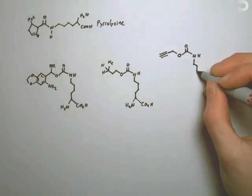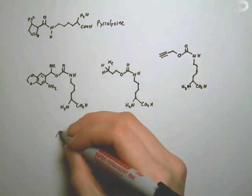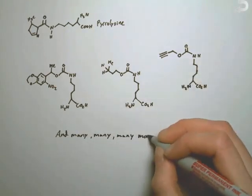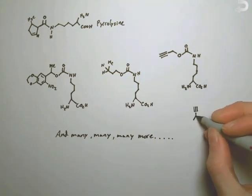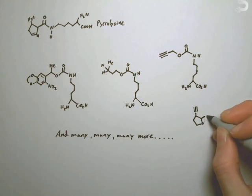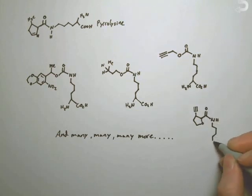Scientists working in genetic code expansion started making new non-canonical amino acids that looked kind of like pyrolysine, and these non-canonical amino acids were transported to the ribosome and incorporated into the amino acid chain quite well, forming unnatural proteins in E. coli cells.